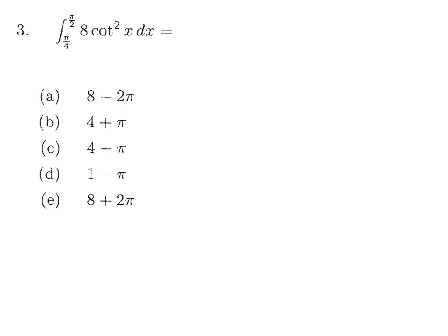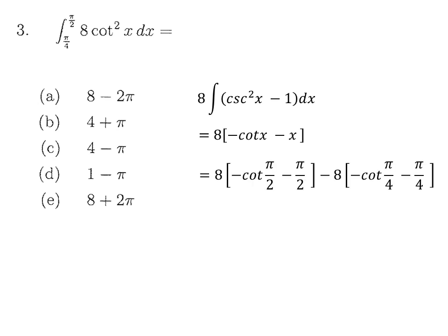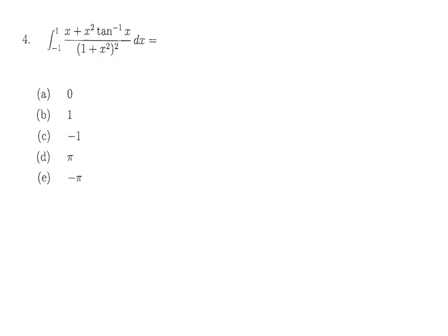Question 3 is also simple. We rewrite the integral using the identity cot²(x) = csc²(x) − 1. Then the integration is straightforward: the anti-derivative of csc²(x) is −cot(x), and integrating 1 gives x. Applying the limits and simplifying gives 8 − 2π as the final answer.